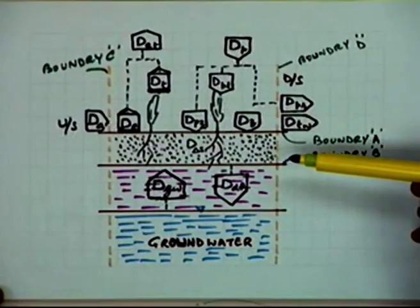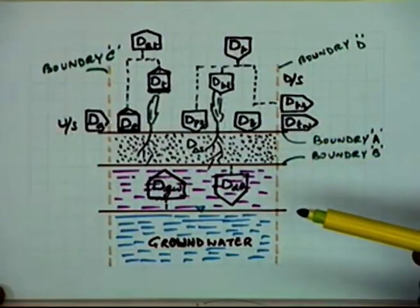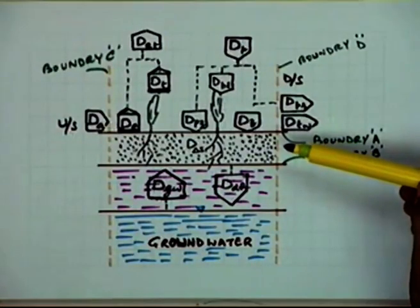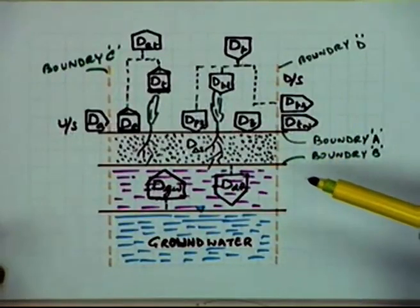We have seen some of the characteristics, namely the root zone depth, and the moisture extraction pattern of different crops - how moisture is extracted from the root zone depth, which varies for different crops. There are still more characteristics which govern moisture attraction and extraction, as well as the sensitivity of moisture availability to crops. Today we will start with the aspects of crop sensitivity to water shortages.